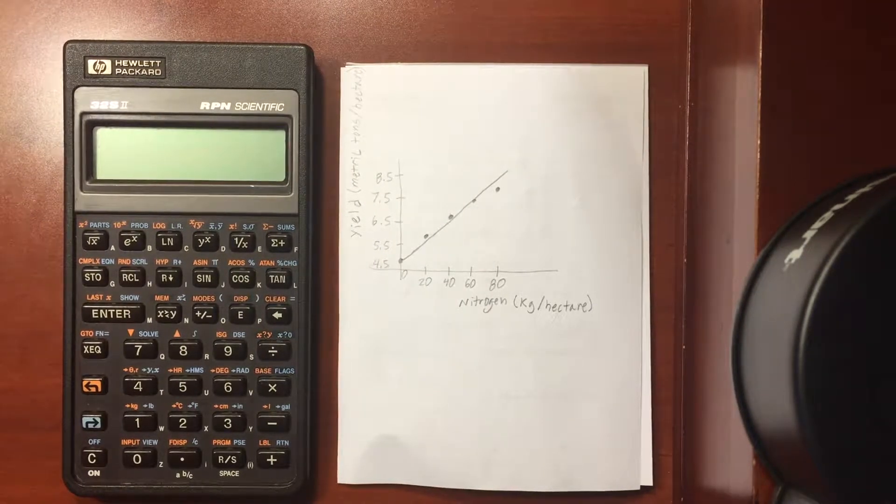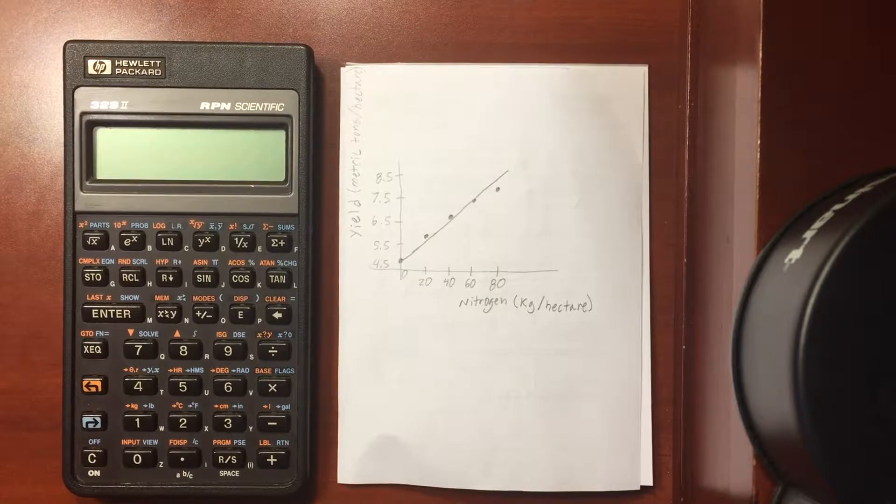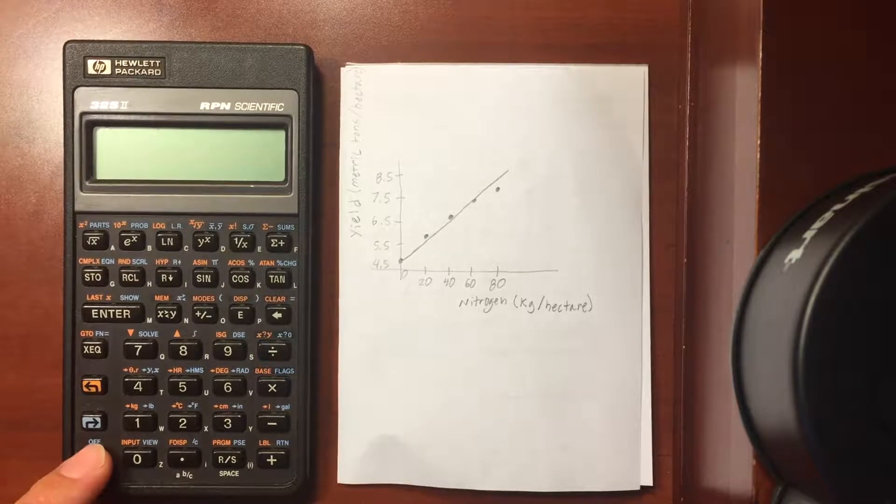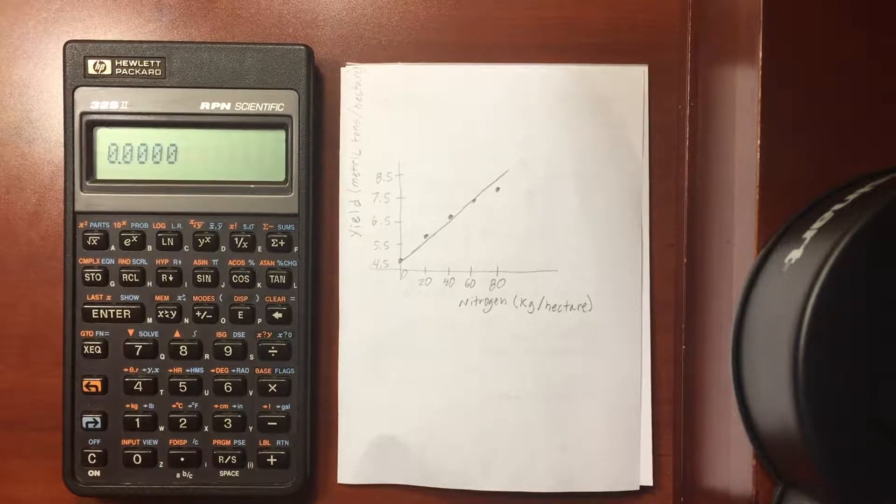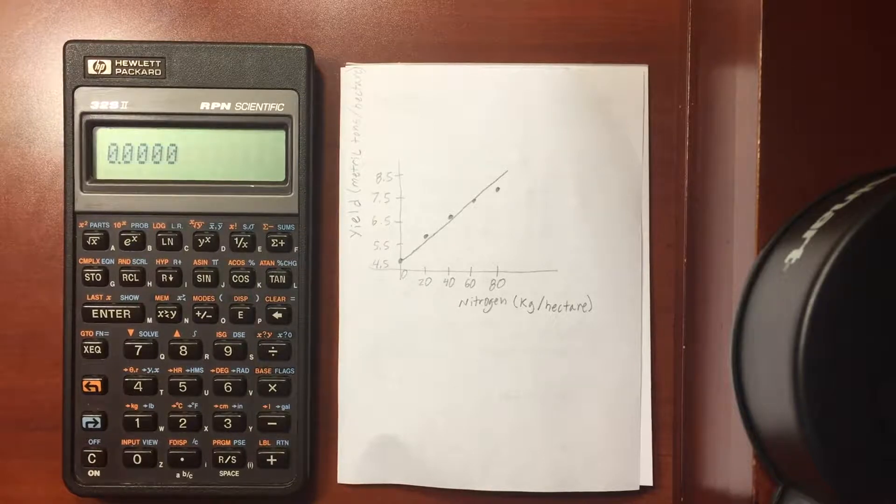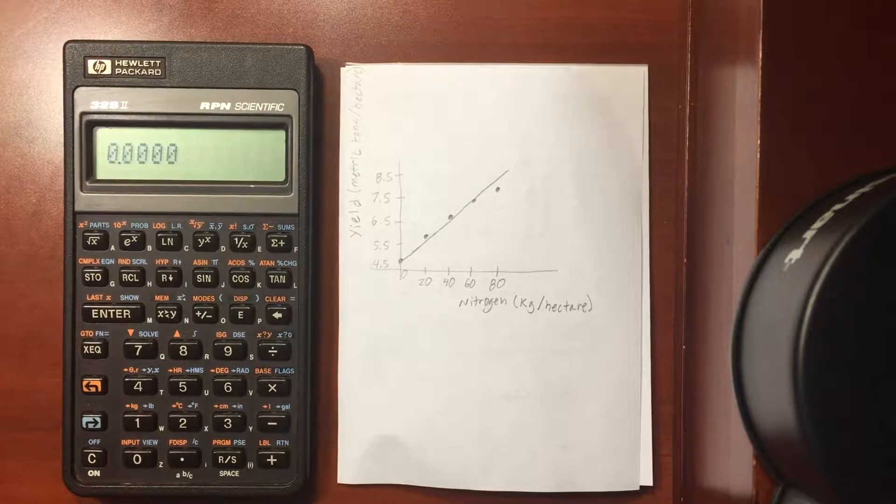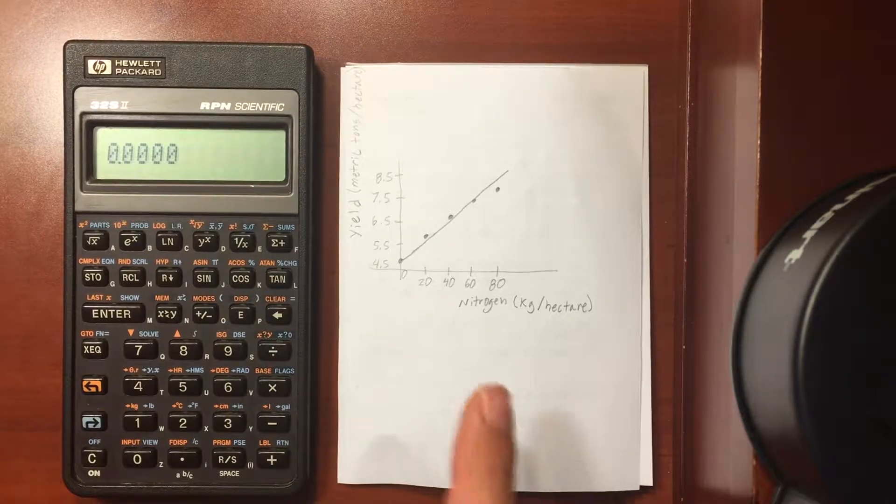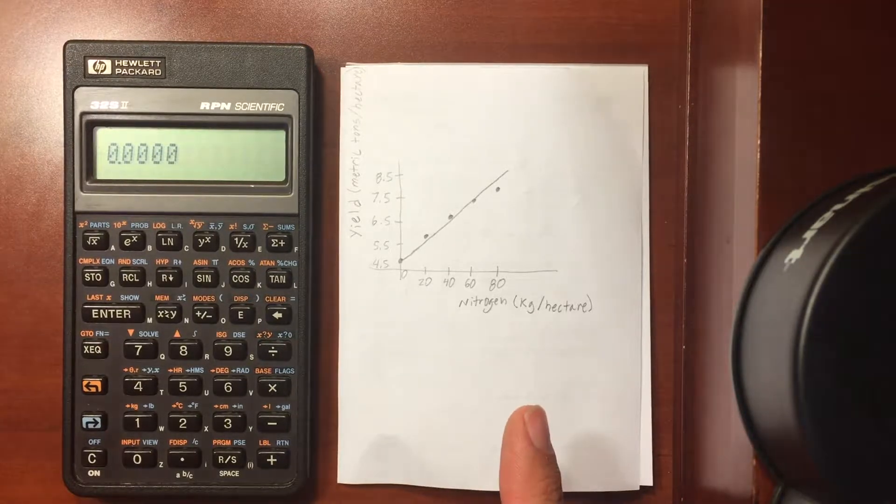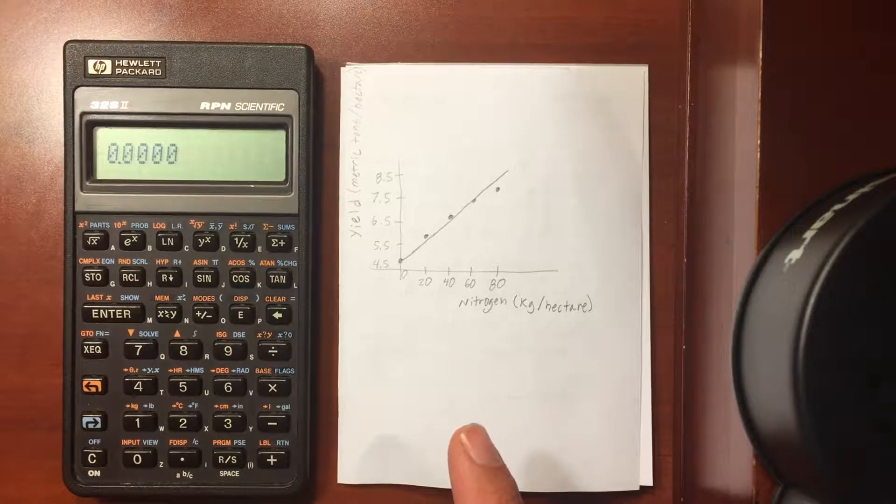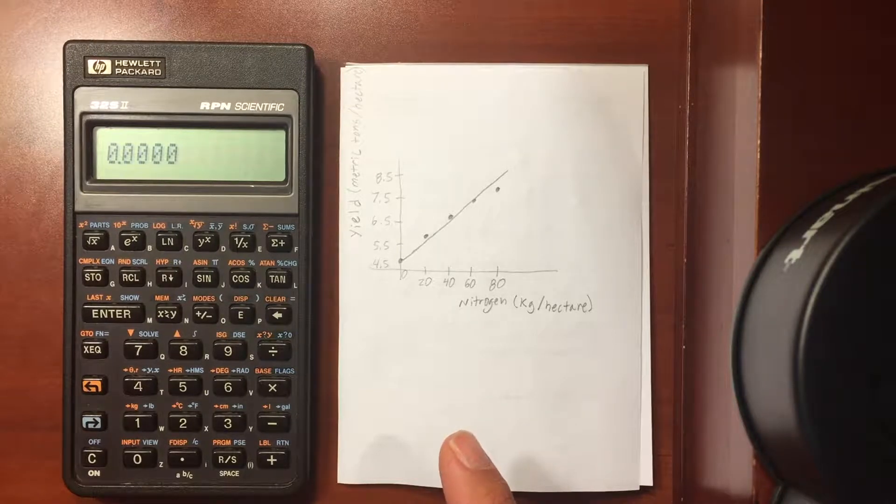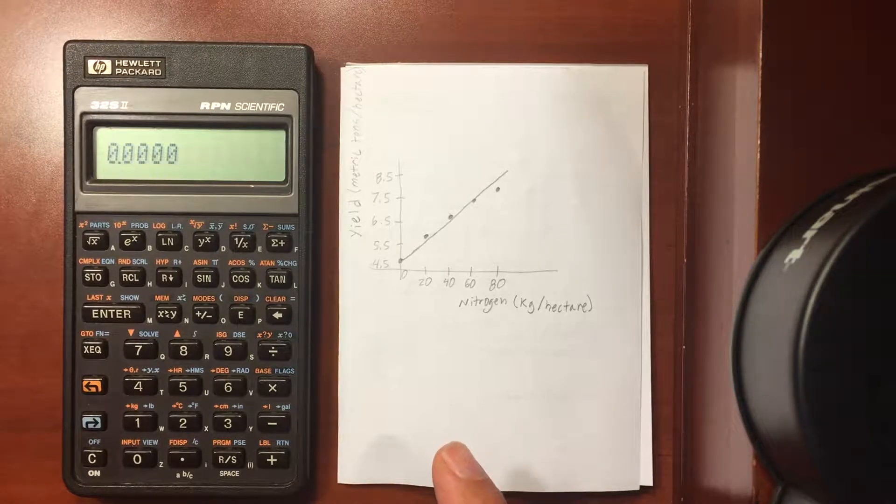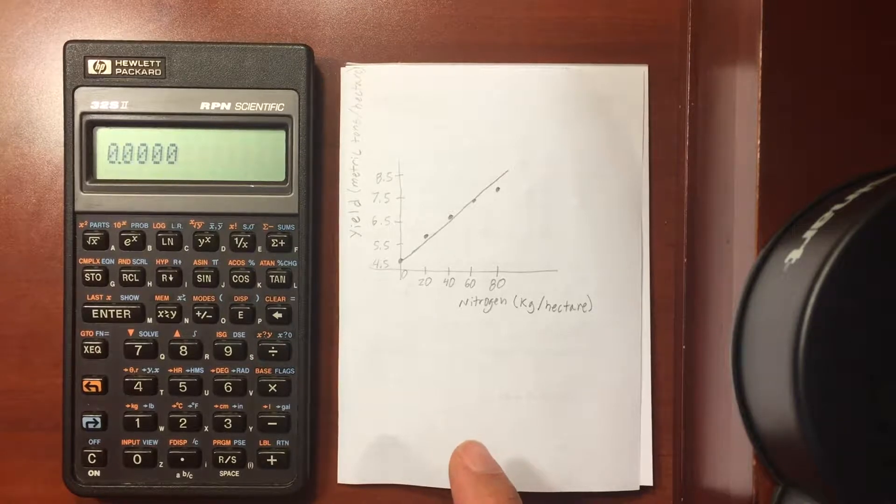We're going to talk about the statistics functionality of the 32S2 and also the linear regression which plays into that. For example, here we've got a set of data. On the x-axis we have nitrogen and on the y-axis we have the yield. So how much will we yield for how much nitrogen is put into the soil?